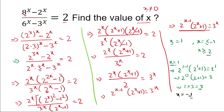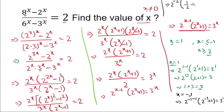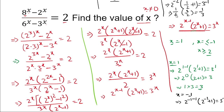We test x=-1: substituting gives 2 to the power (-1-1) times (2 to the power -1 plus 1) equals 3 to the power -1. This gives 2 to the power -2 times (1/2 + 1) equals 1/3, which is 1/4 times 3/2 equals 1/3, giving 3/8 equals 1/3. This does not match, so x=-1 does not satisfy the equation.